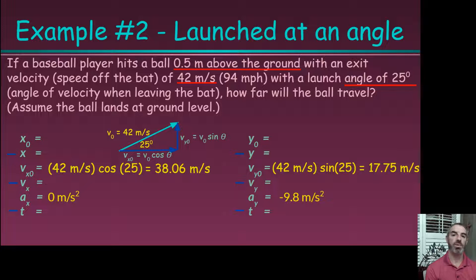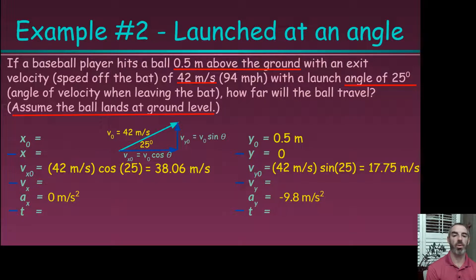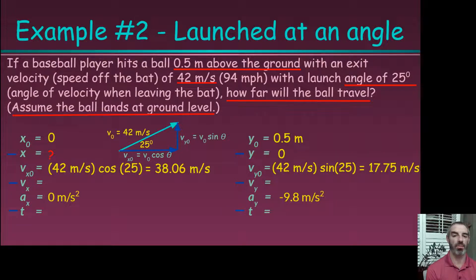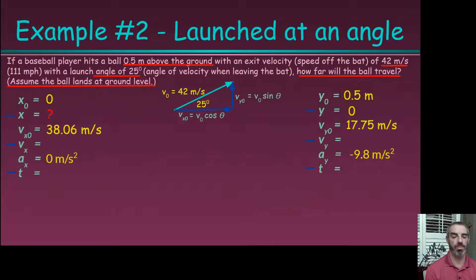We're told the ball is 0.5 meters above the ground — that's the initial height. It's assumed to land at ground level, so the final y is zero. The problem tells us nothing about horizontal position, so we assume the initial horizontal position is also zero. We've compiled our variable list and velocity diagram, and now we're looking for how far the ball will travel, which is our final x.